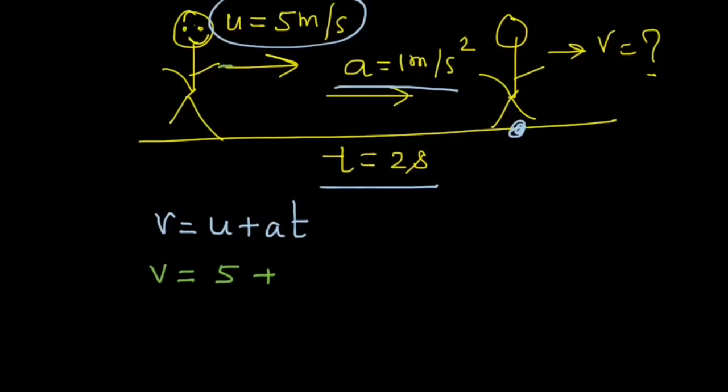You take a look at the direction of u. It is to the right and let's say that we assume this to be the positive direction. Because acceleration is in the same direction as the initial velocity, therefore, we will say that the acceleration is also positive. And so, we write 1 into 2 that is the time and that gives us 5 plus 2, 7 meter per second. So, the velocity of this man after 2 seconds will be 7 meter per second.